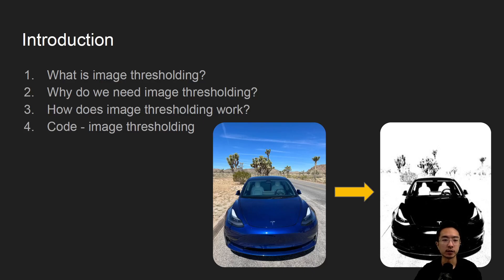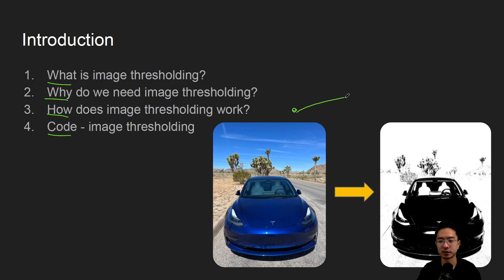In this video we're going to talk about image thresholding in OpenCV using Python. We'll start off by saying what it is, why do we need it, how does it work, and jump straight into a coding example. By the end of this video, we'll be able to see how we could go from this image here on the left to this image here on the right.